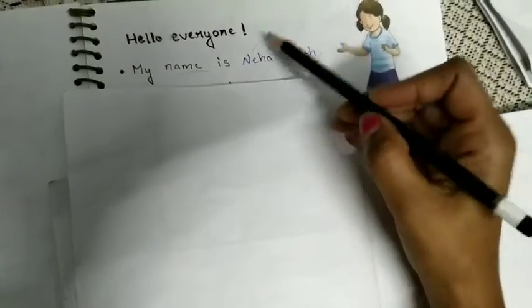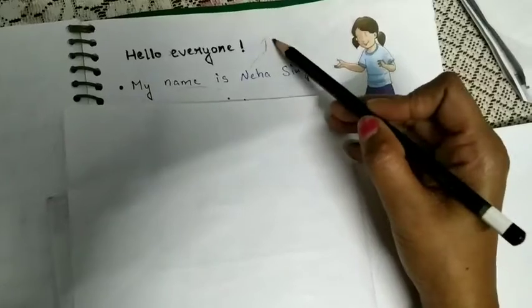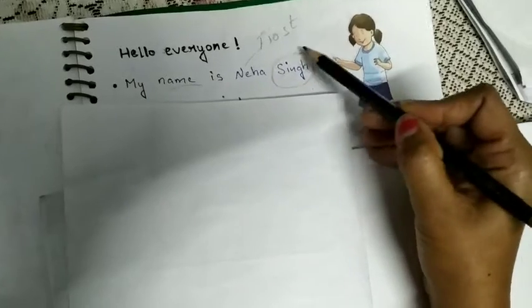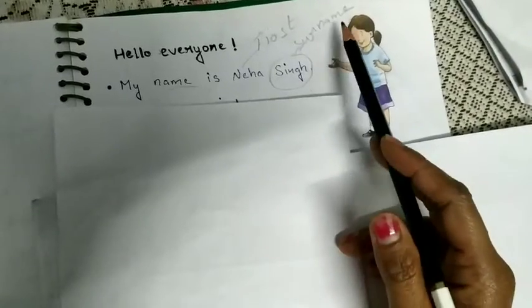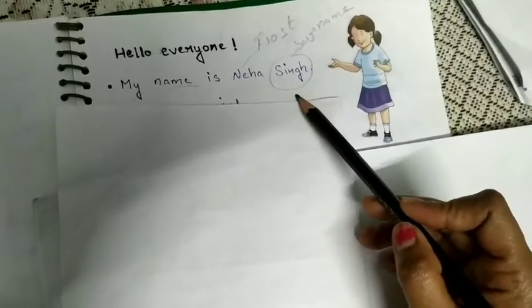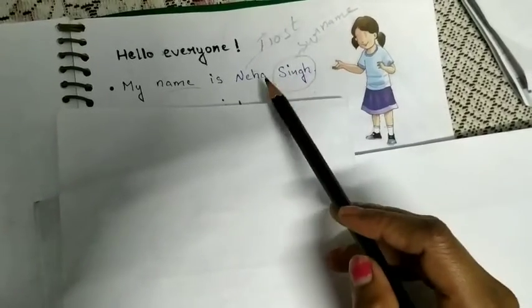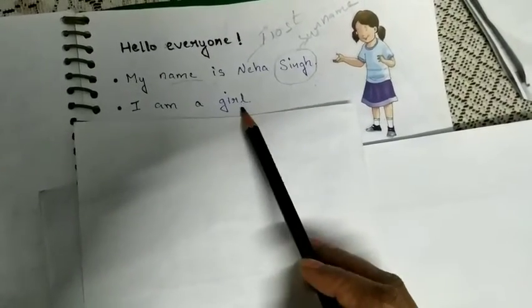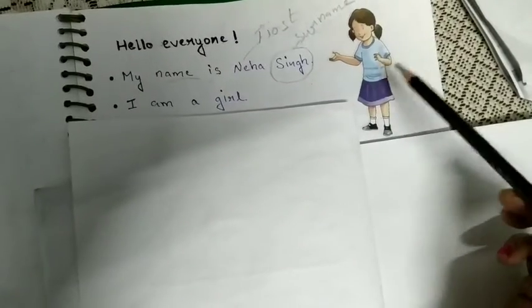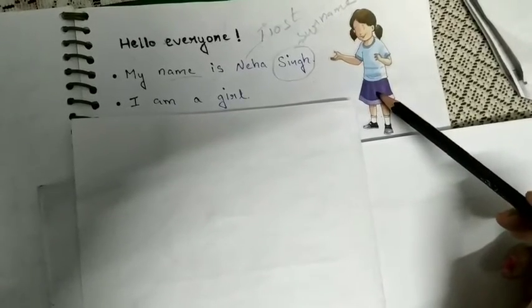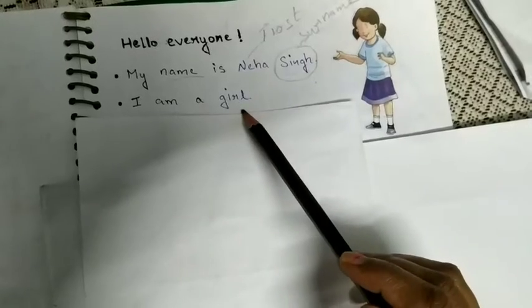As I told you earlier, Neha is her first name and Singh is her surname. From where did she get the surname Singh? From her father's last name, or from her father's surname. Neha also got her surname Singh from her father. She is introducing herself that she is a girl — as you can see in the picture, she is a girl.